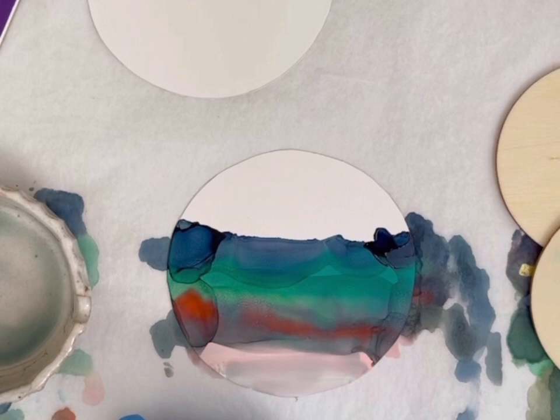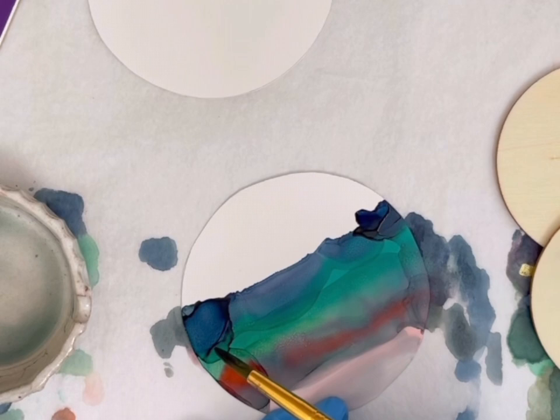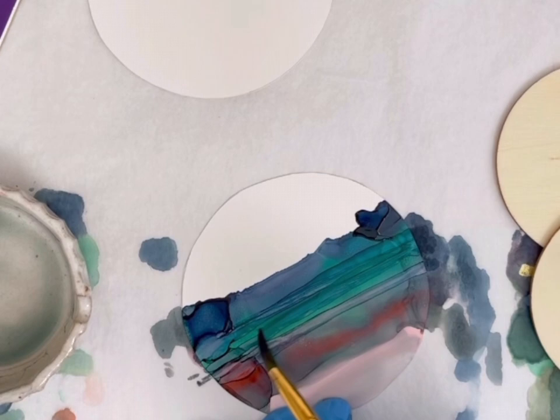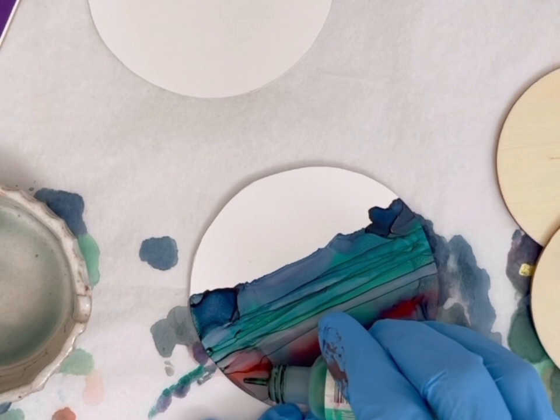I just want a base so then we can go and start putting in textures and really defining the composition. I put a little bit of denim on my brush and here I'm just kind of adding in a little bit of texture, kind of lifting some of the ink.